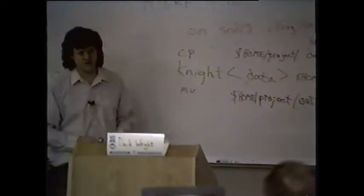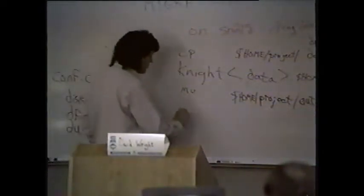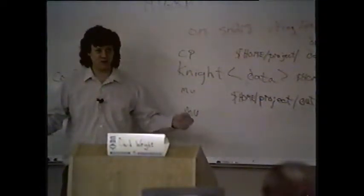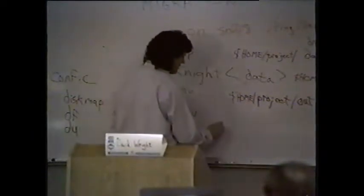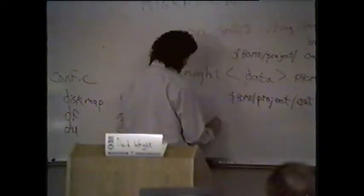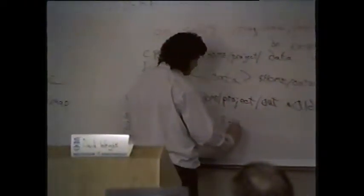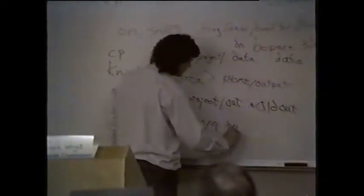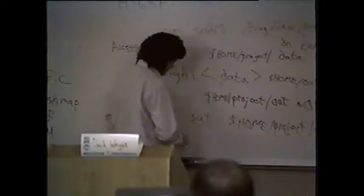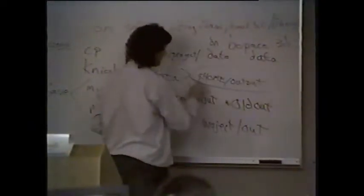Fetch in our data, compile our source, link it together, execute it, and then a move. A move — instead of copying this stuff — we could have moved it. It will result in the same thing because it's across file systems. However, the old version is gone, whereas with a copy you've got both versions, depending upon what you want to do. So we could move out to dollar HOME slash project slash out.